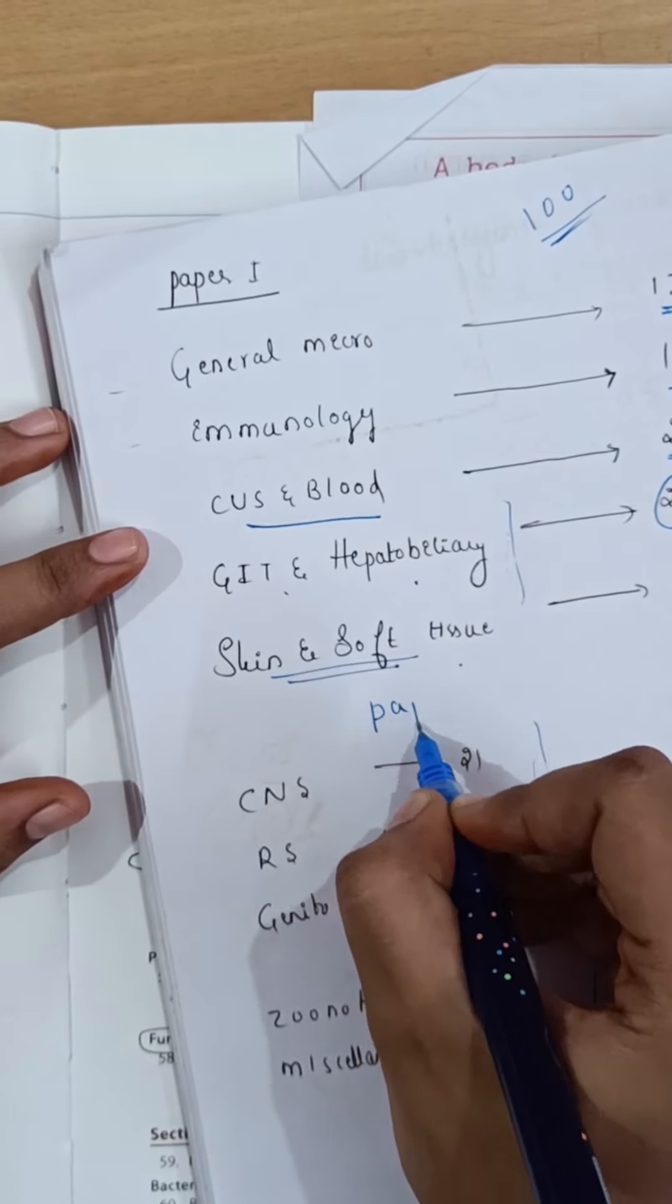In this edition, they have divided the syllabus into general microbiology, immunology, and hospital-acquired infection. The main content is organized by systems and the infections coming under each system. They cover bloodstream infections, GIT, hepatobiliary, skin and soft tissues, respiratory, CNS, and genitourinary systems.